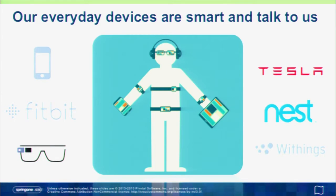It's always good to level set on why it matters that we're paying attention to what's happening in the space of streaming data and large volumes of sensors. Our everyday devices talk to us. Many of us have smartphones, different wearables — Fitbit, Jawbone, Misfit — various devices that you wear tracking things about you. Even your iPhone will do that, and we have devices around us that do that as well.